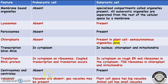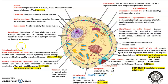Centrosome and centrioles are absent in prokaryotic cells but present in eukaryotic cells. Vacuoles are usually absent in prokaryotes, but a very small gas vacuole may be present. Plant cells have very large vacuoles while animal cells have small vacuoles. This shows a typical diagram of a eukaryotic animal cell.